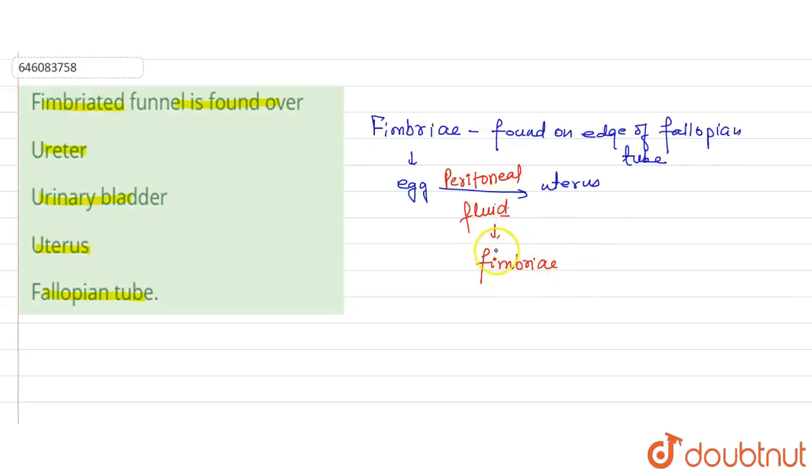Which is in the direction of the ovary. So we can say that fimbri is found in the fallopian tube.